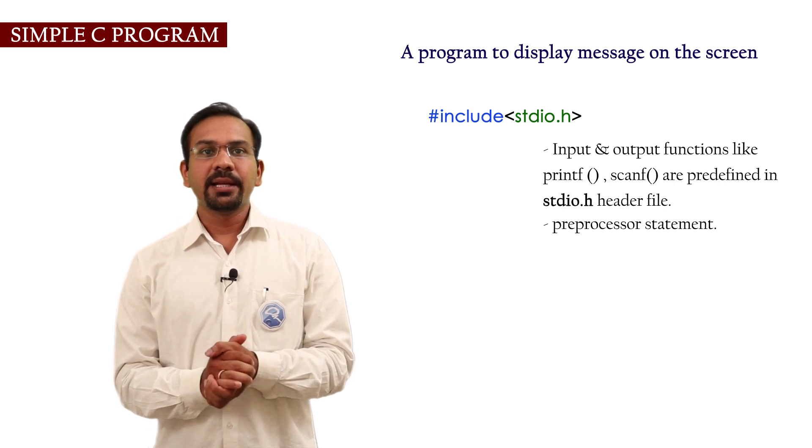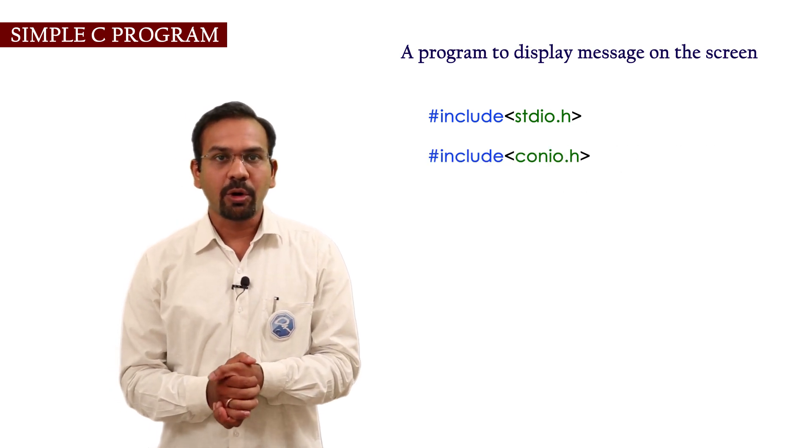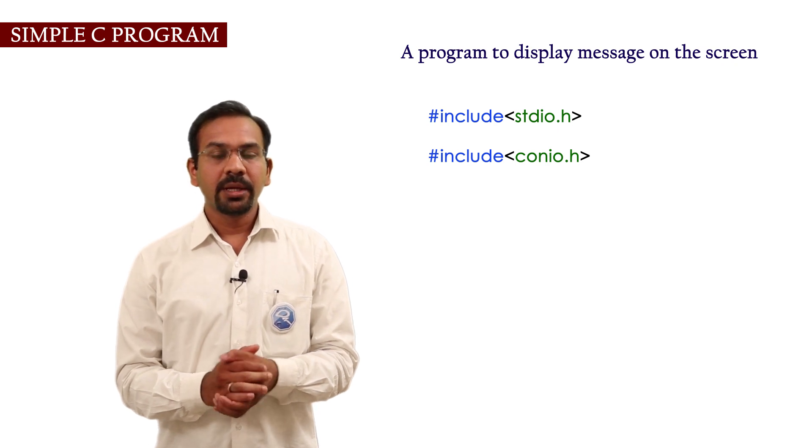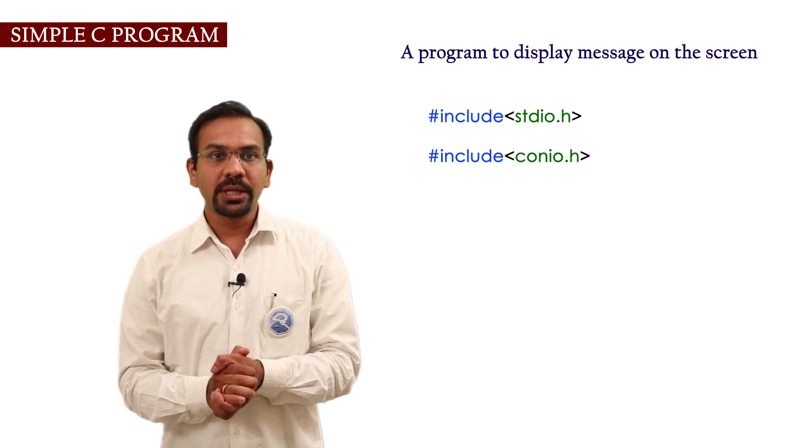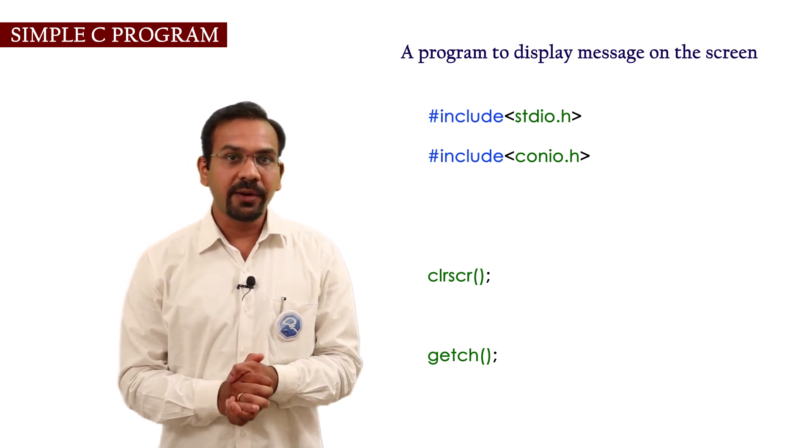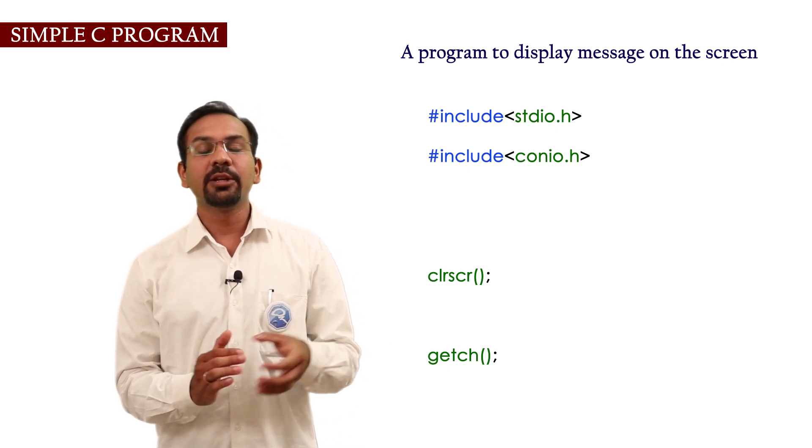The next header file is #include conio.h. It means console input output. In our example we are using clrscr and getch functions. These functions are predefined in conio.h.